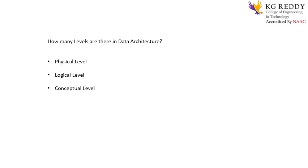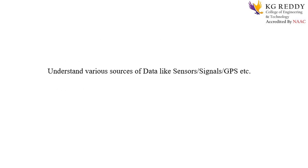Now we will be going to the second topic: understanding various sources of data like sensors, signals, GPS, etc. I will first explain the various sources of data analytics and then the different types of sensors, signals, and GPS used for data analytics. I will explain all these things clearly in the next class. Thank you all.